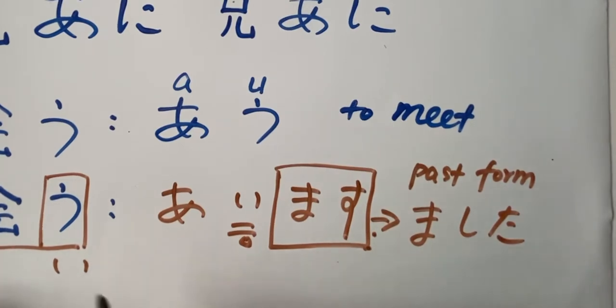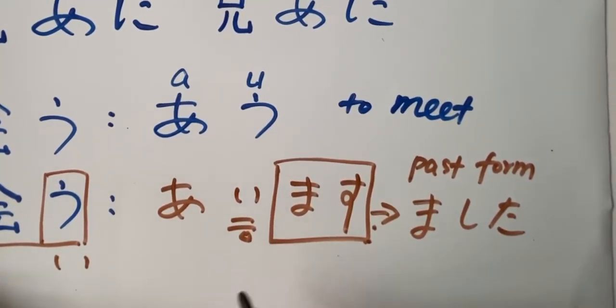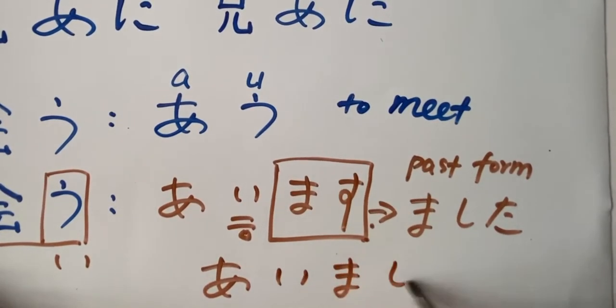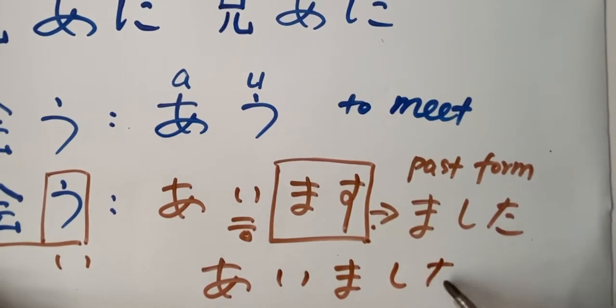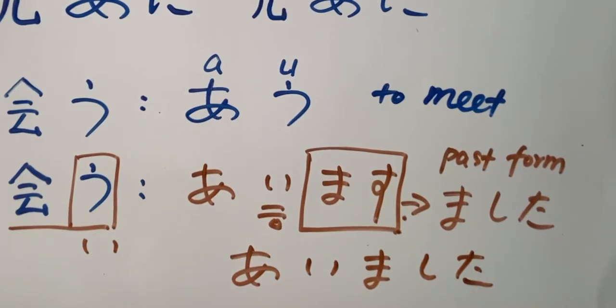Mashita. So au, it changes to the past form. Aimashita. Okay. Later we're going to use this to create sentences. Aimashita.